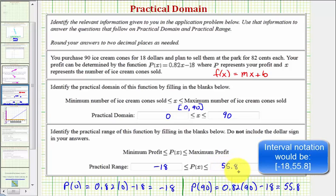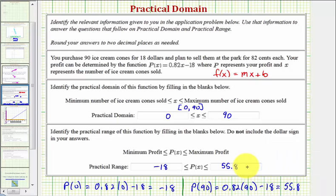So again, this tells us that if we sell zero ice cream cones, we're actually going to have a loss of $18. If we sell all 90 ice cream cones, we'd have our maximum profit of $55.80. I hope you found this helpful.